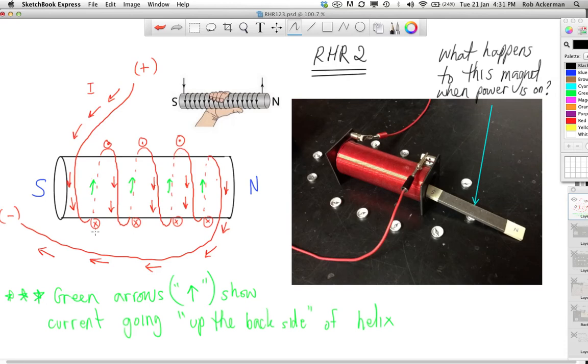Interestingly, or incidentally, when the current goes down the front and then goes to the back side, it's going away from us. So, we could put an X there for the current. That is perfectly legal. The X's and dots are not just reserved for magnetic field. They can be current, or for that matter, any vector at all. As long as it's going toward you or away from you, you can use dots and X's.